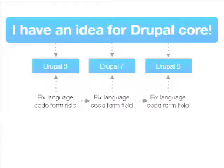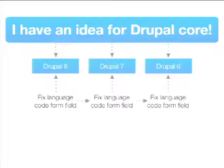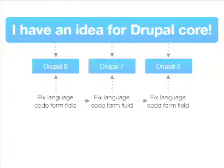If you want to fix something in Drupal 7 or Drupal 6, you'll likely be pushed to Drupal 8 first and need to figure it out there, then go back. That's problematic if you don't have the resources or interest in fixing the same thing with all the changes in Drupal 8 — it increases your required involvement. But for the Drupal community at large, it's very nice because it means we're not introducing regressions in later versions.